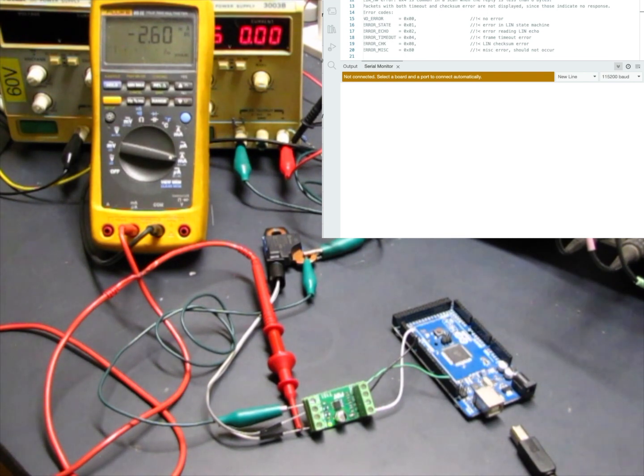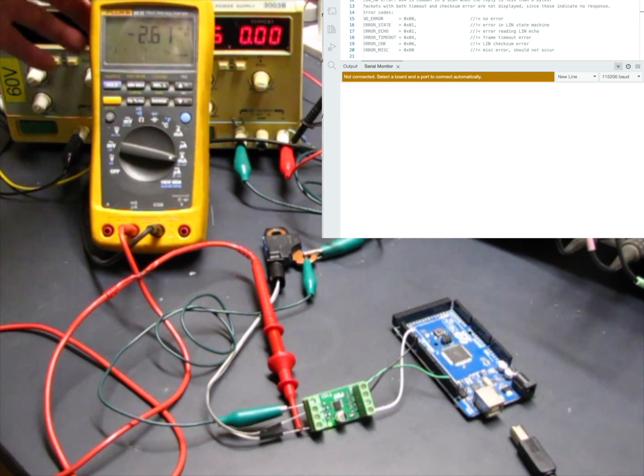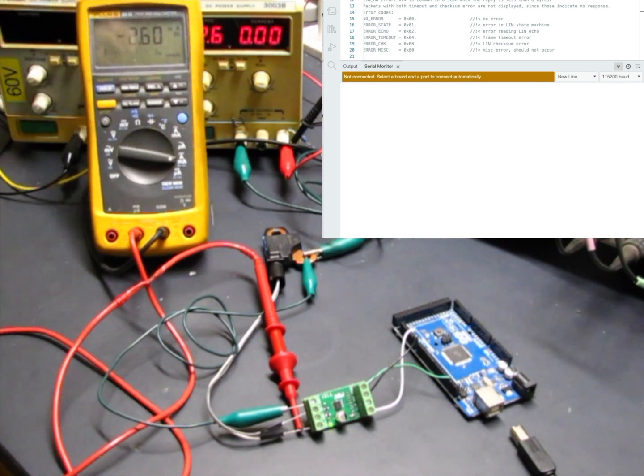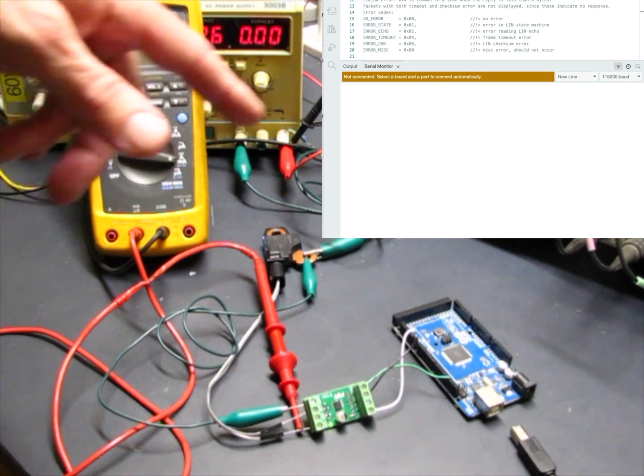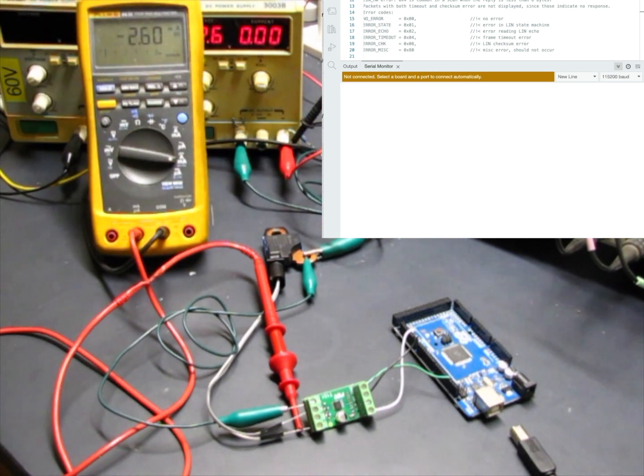So here we have the same Smart for Two current sensor connected up again to a 12 volt power supply with a milliamp current meter in line with the power. This time we've hooked it up to the T151 LIN interface chip that's tied to an Arduino Mega 2560.